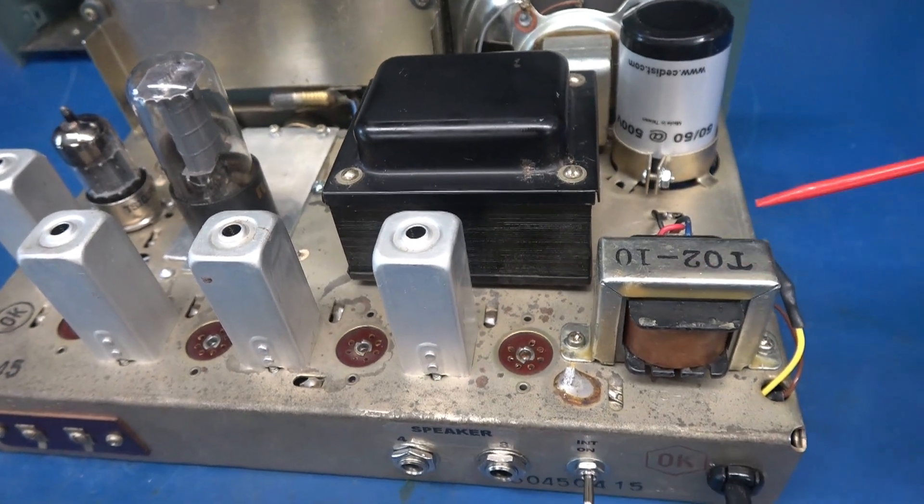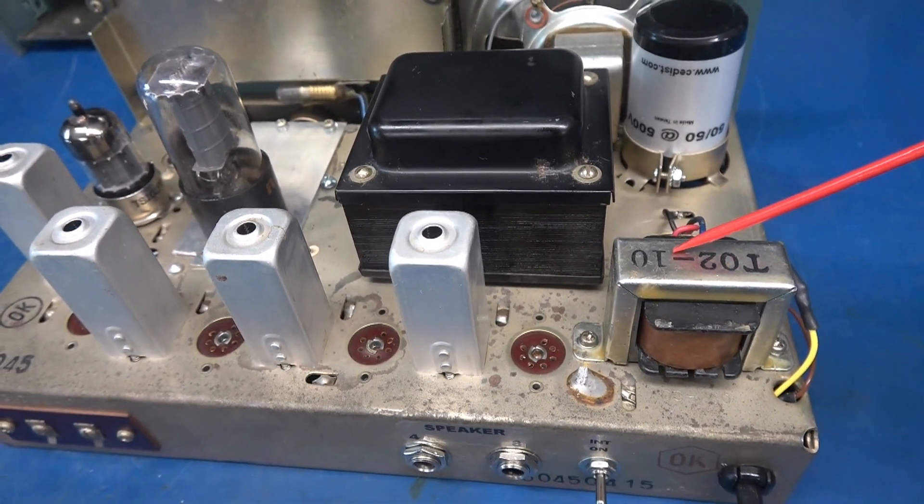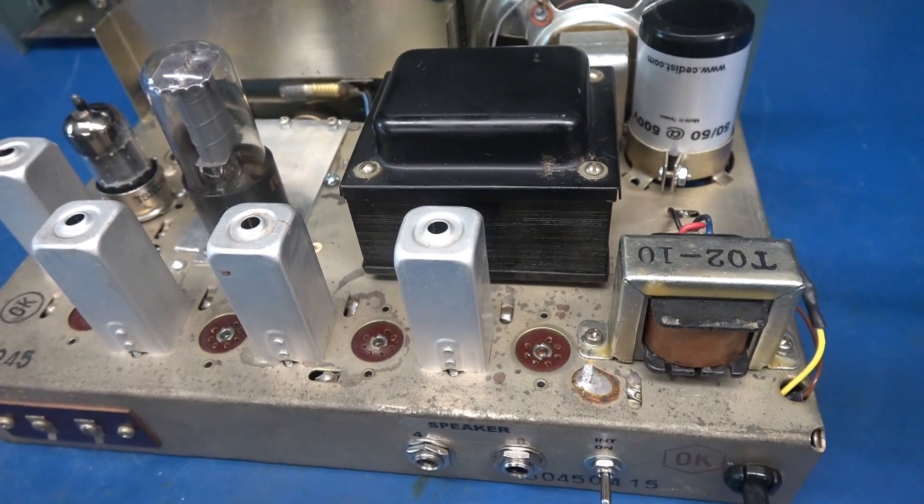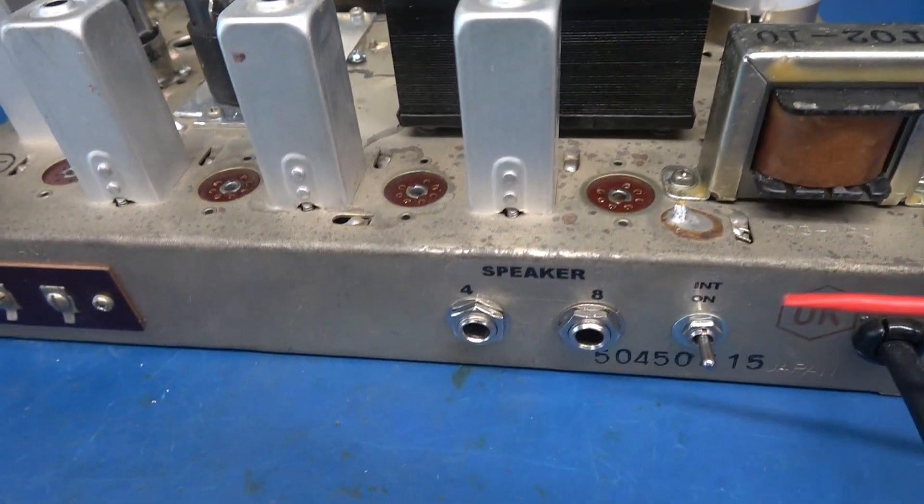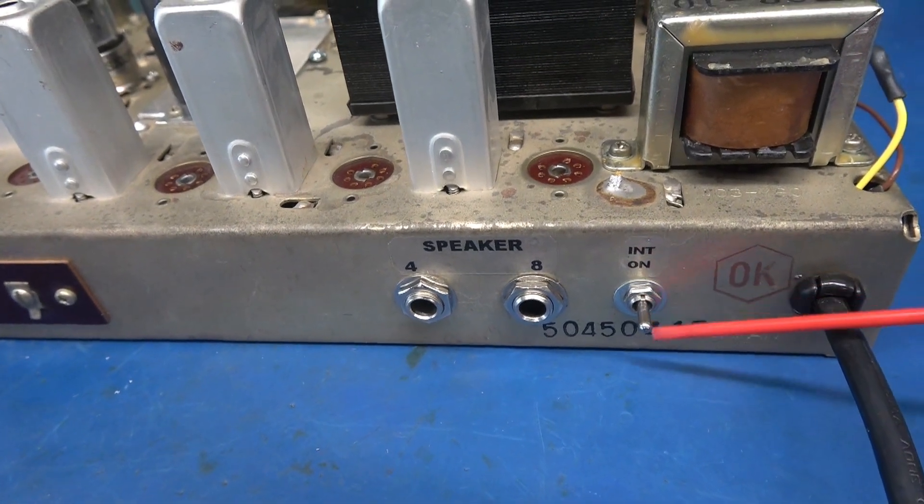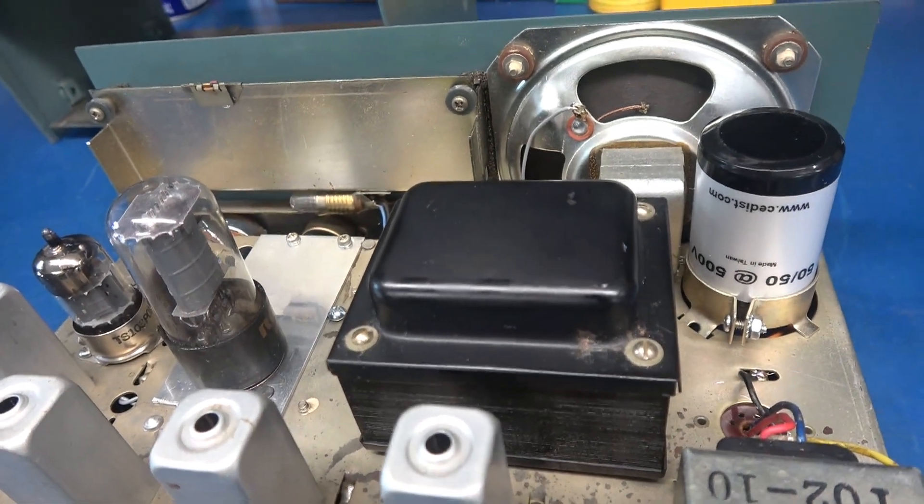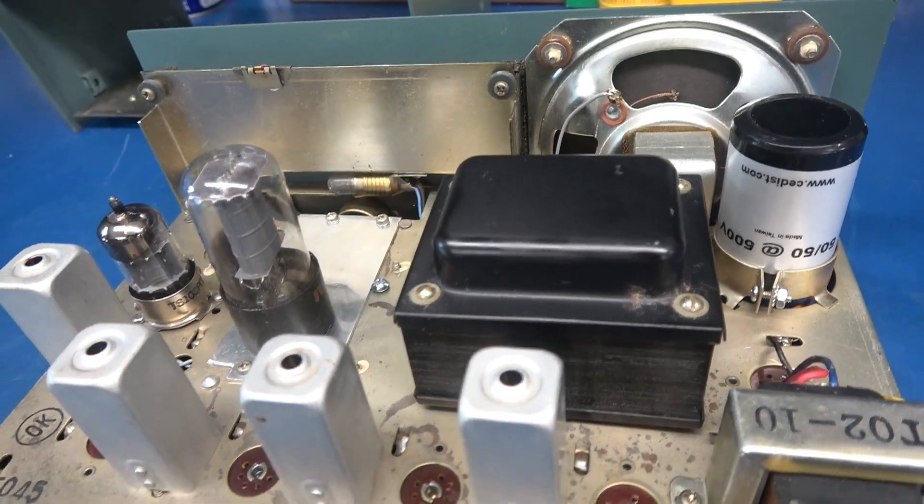Got a new filter cap. And if you look here, you see the output transformer is now on the top of the chassis. I had some issues with that. I'm going to go into in a few minutes. Down here we have the speaker outputs. Got 4 and 8 ohm. And then this little switch turns on the internal 4 inch cheesy speaker that came with the radio.